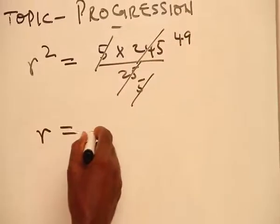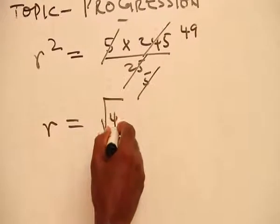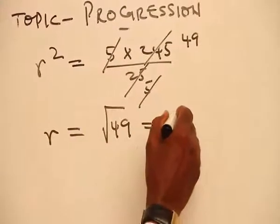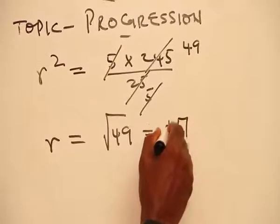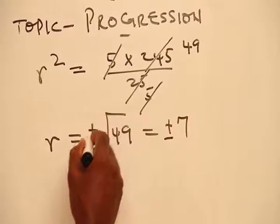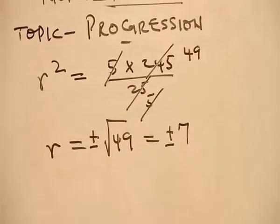Therefore, our r is equal to the square root of 49, and the value is plus or minus 7, because the square root of a number is plus or minus.